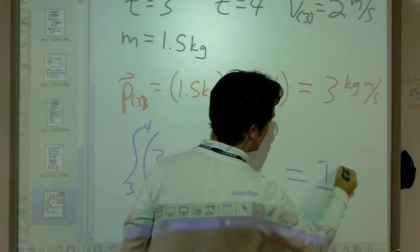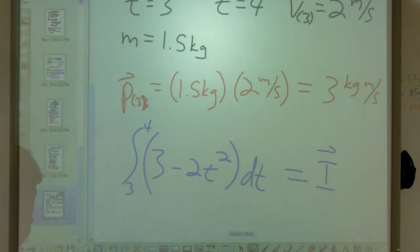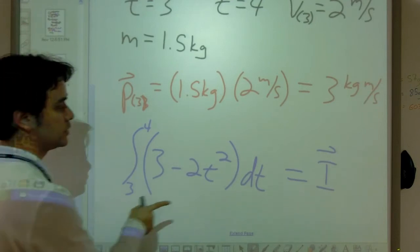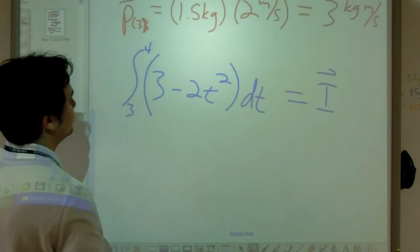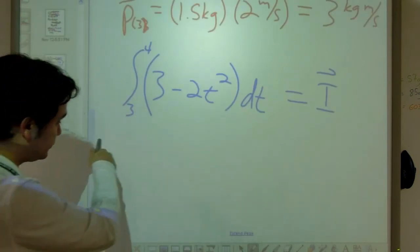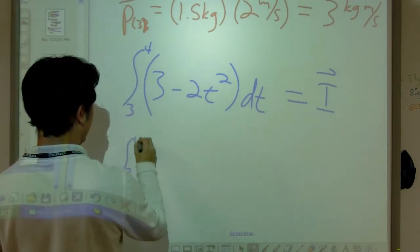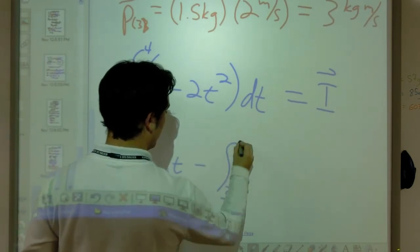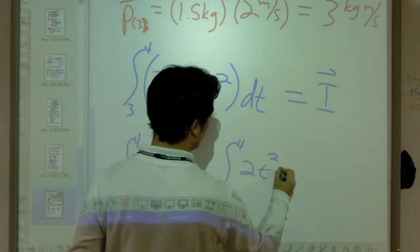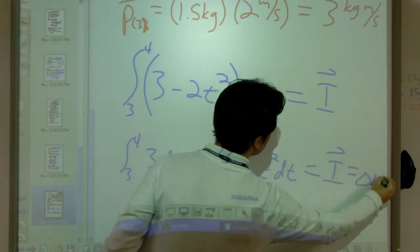And we're going to evaluate this from three to four seconds. This will be equal to my impulse. Now remember, these are vectors. In this case, we're dealing in one dimension, so we're keeping track of that solely with positive if it's moving to the right or negative if it's moving to the left. I'm going to split this up where I've got the integral evaluated from three to four of three dt minus the integral evaluated from three to four of two t squared dt, and that's going to be equal to my impulse, which is equal to delta p.